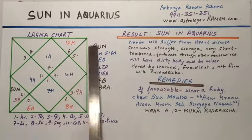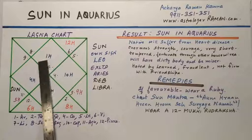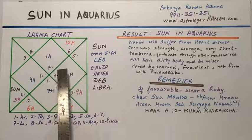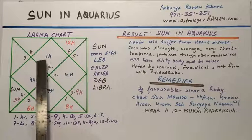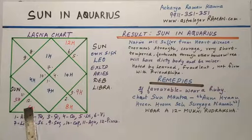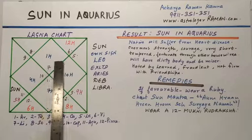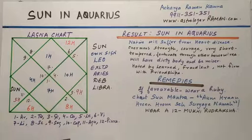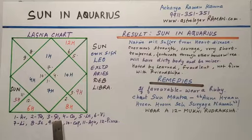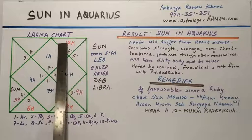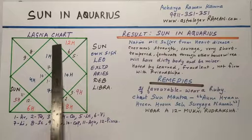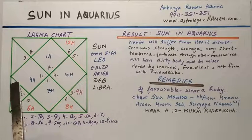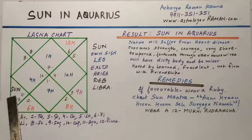As you can see the Lagna chart or main birth chart here, the first house always remains where ascendant is written. The number written here can change because these are rashis or signs, but the first house would always be where ascendant is written. Here 7 stands for Libra, 8 for Scorpio, 9 for Sagittarius and so on. But the first house will always be where ascendant is written. Here Sun is placed in the 11th sign, which is Aquarius.